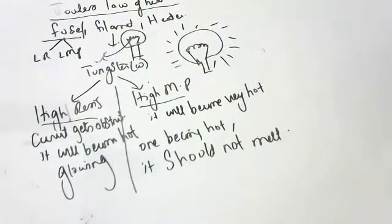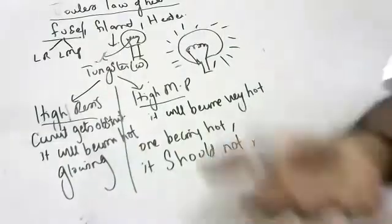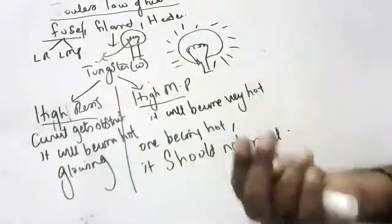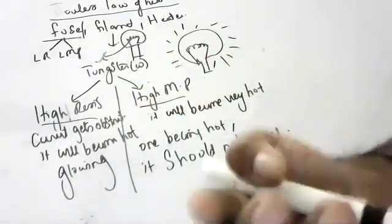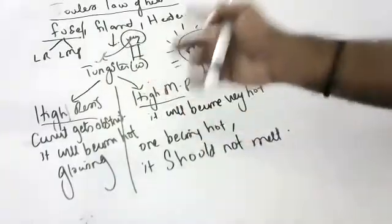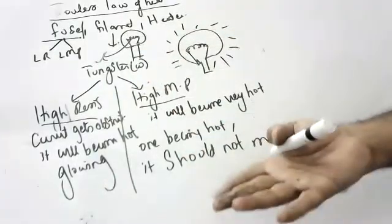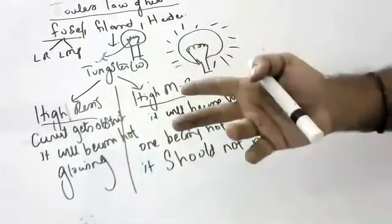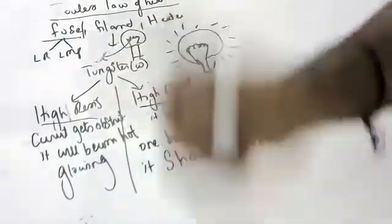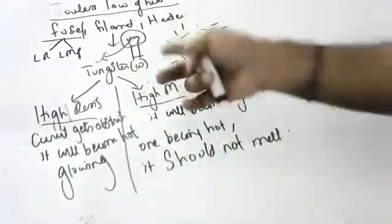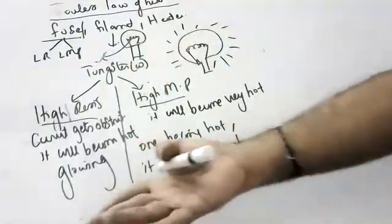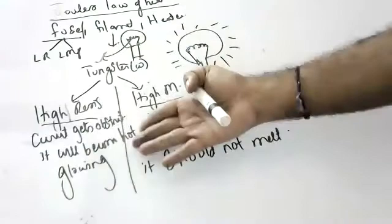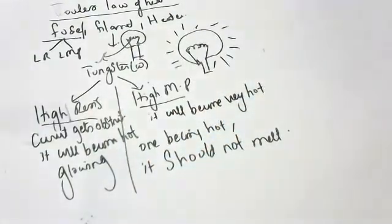Who invented the bulb? Thomas Alva Edison. He did this experiment thousands of times — he tried all elements one by one. Finally, he found that tungsten worked. That is what makes him a genius.